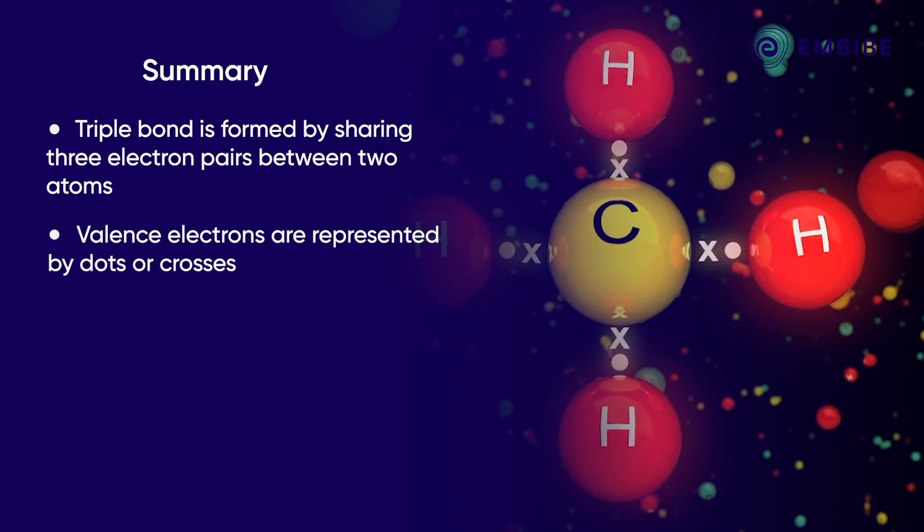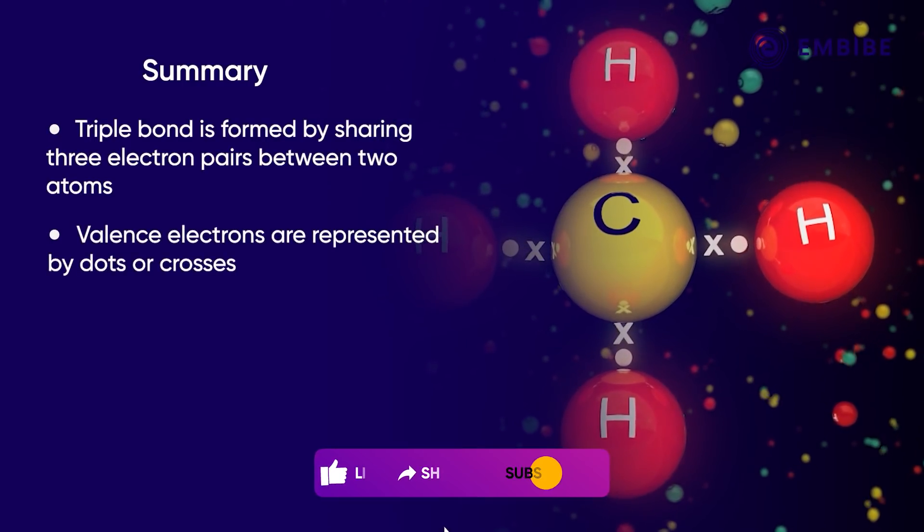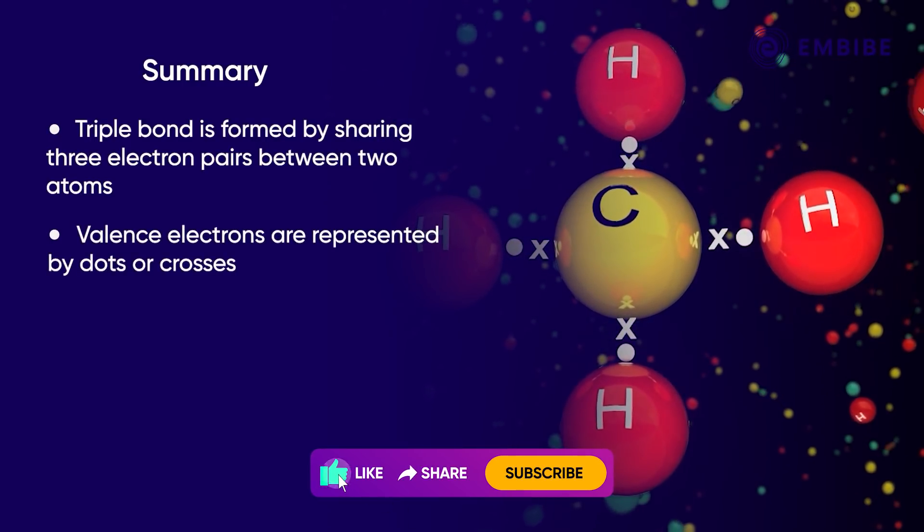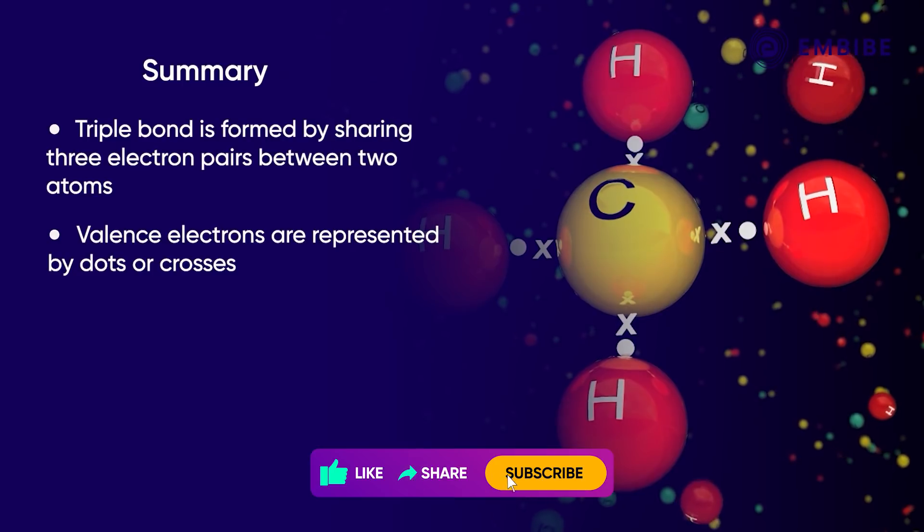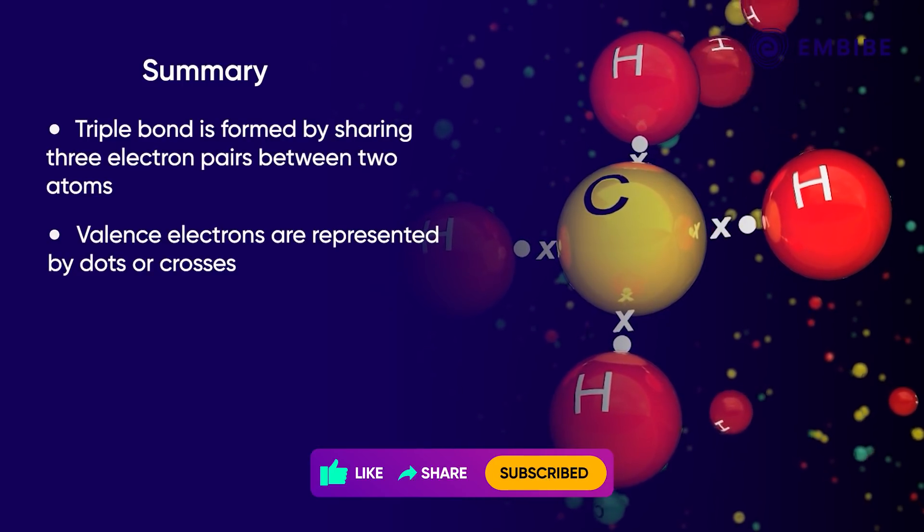According to the Lewis notation, the valence electrons of covalently bonded atoms are represented by dots or crosses.